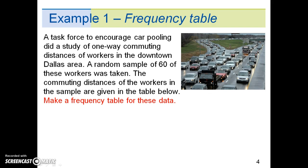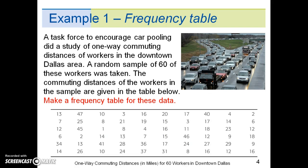The commuting distances of the workers in the sample are given in the table below. Make a frequency table for these data. Here is the data for a random sample of 60 workers and their one-way commuting distances to downtown Dallas.